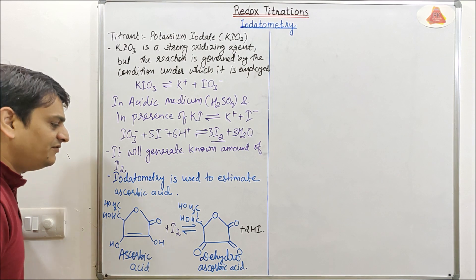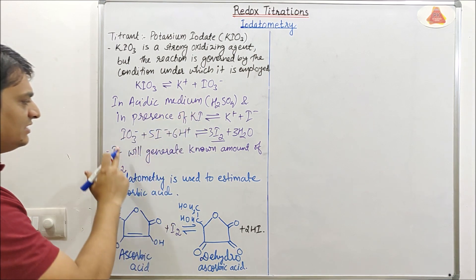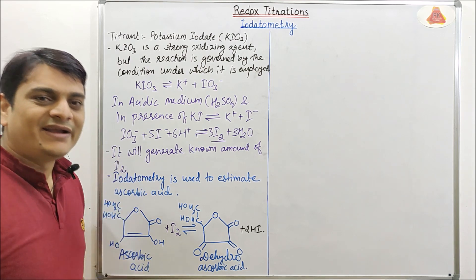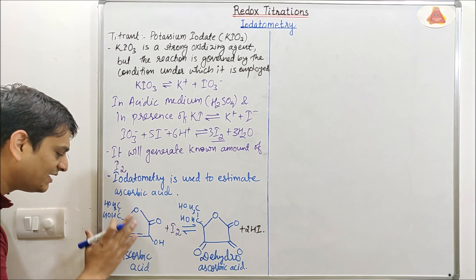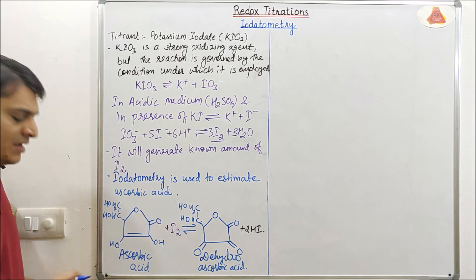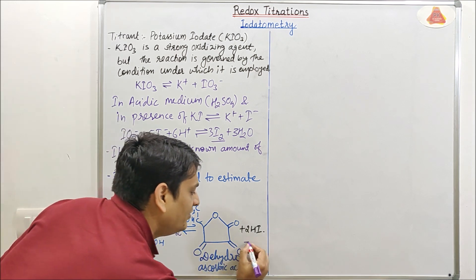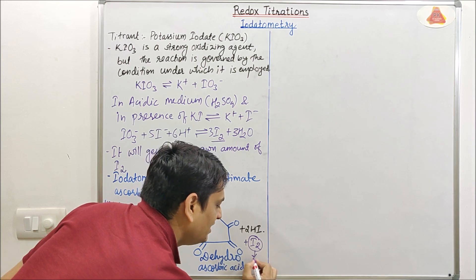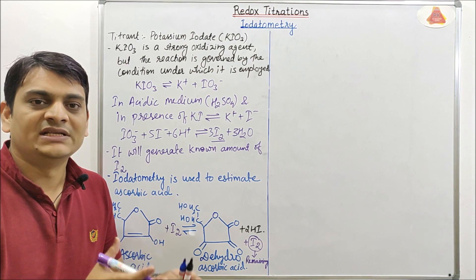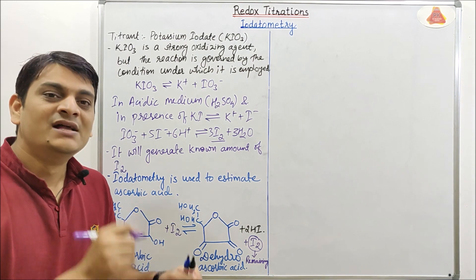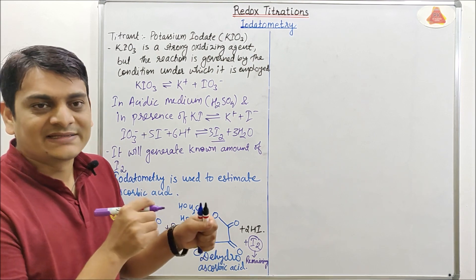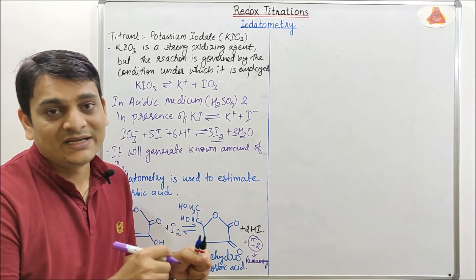In the back titration method, we take KI, acidic medium, and standard KIO3 solution together in the iodine flask. We then add the ascorbic acid sample (analyte) to the flask. All ascorbic acid reacts with I2, but some I2 will remain. This remaining I2 is estimated using a standard solution of sodium thiosulfate, just like in iodometry. This back titration method gives the exact end point using starch as an indicator.